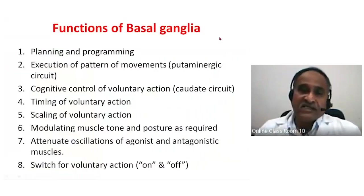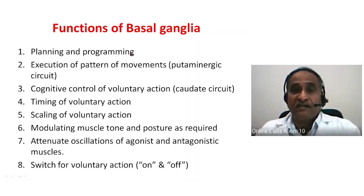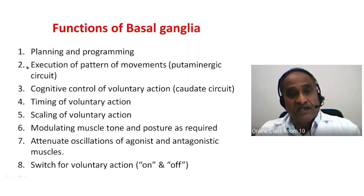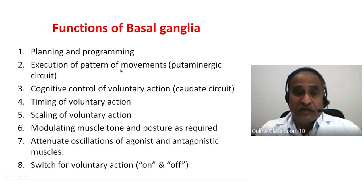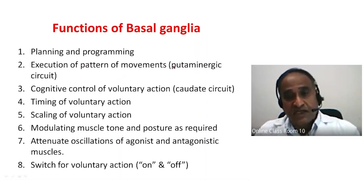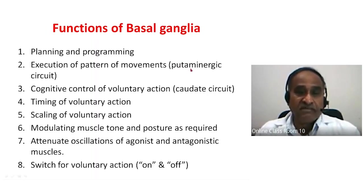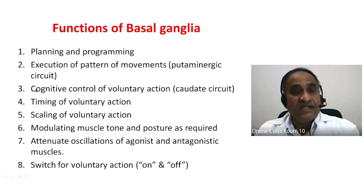Moving on to the functions of the basal ganglia: first is the planning, programming, and sequencing of voluntary actions — the voluntary action is split into a number of items and all planning, programming, and sequencing is done here. Second is the execution of patterns of movements — walking, talking, running, swallowing — executed through the putaminergic circuit, from premotor cortex to putamen, through direct and indirect circuits, back to thalamus and motor cortex.